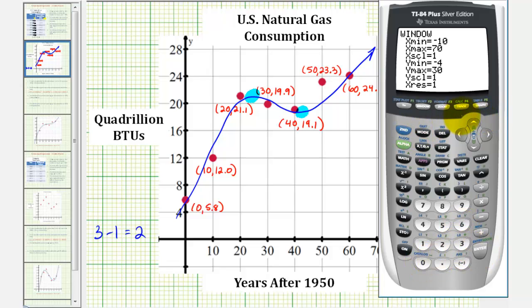Now a quick, easy way to turn the scatter plot on is to press Y equals, press up to highlight plot 1, and then press ENTER. If we go back down, notice how it's highlighted, so the scatter plot 1 is on. So if we press graph, notice how it looks just like our scatter plot here.